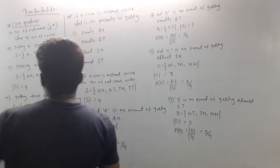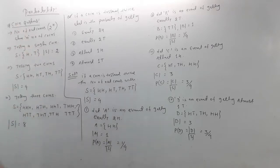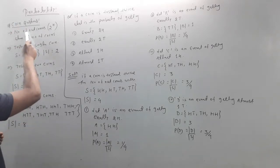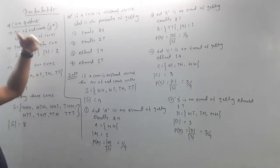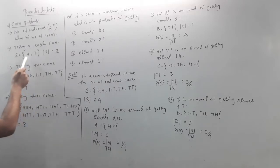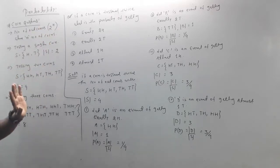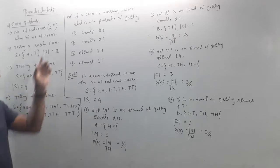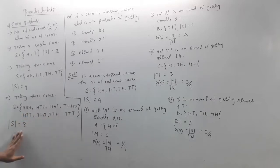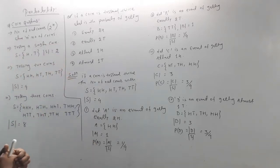Now let's look at different types of questions. First, the coin question. The number of outcomes for a coin problem is 2 to the power n, where n is the number of coins. For 1 coin: 2¹ = 2 outcomes (head, tail). For 2 coins: 2² = 4 outcomes (HH, HT, TH, TT). For 3 coins: 2³ = 8 outcomes.